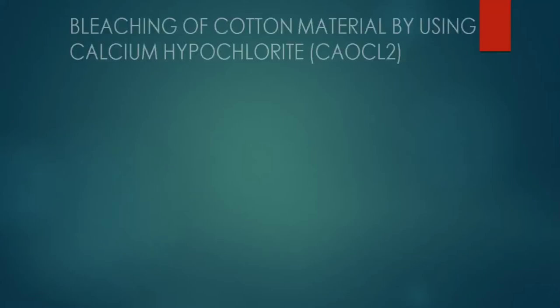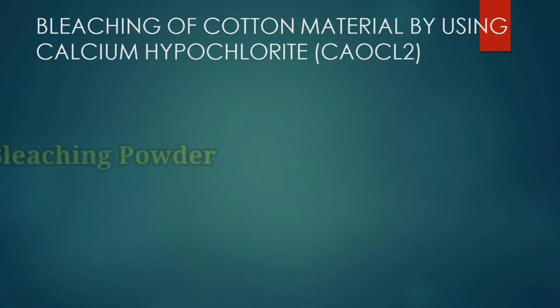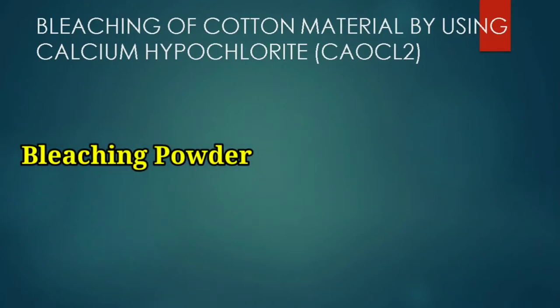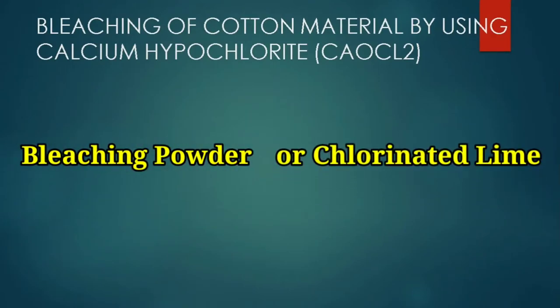Hi students, today we are going to learn how to bleach cotton material by using calcium hypochlorite or bleaching powder. Calcium hypochlorite is also called bleaching powder or chlorinated lime.